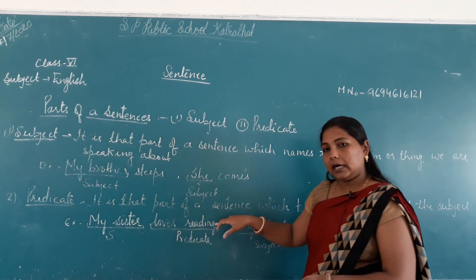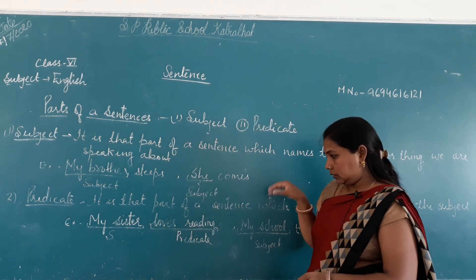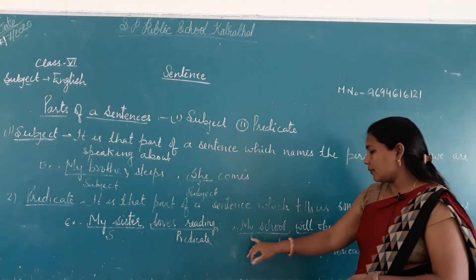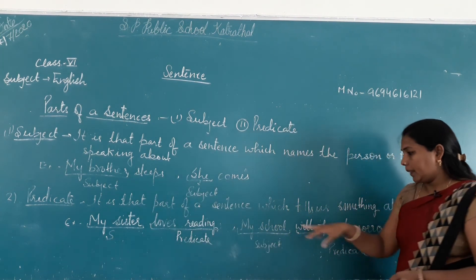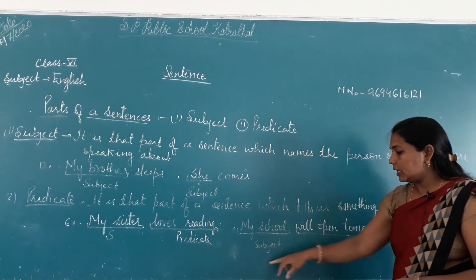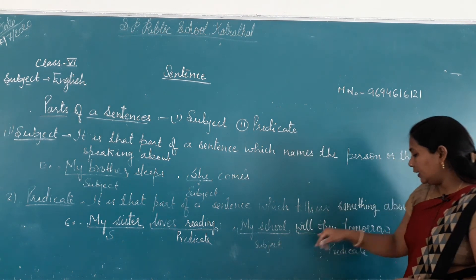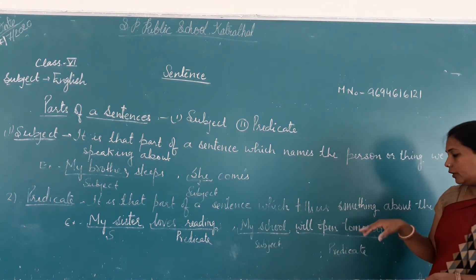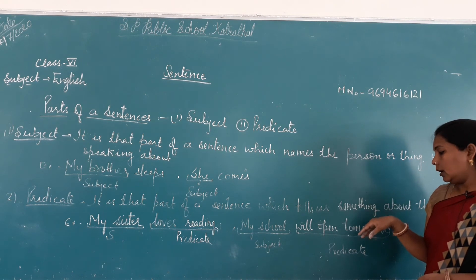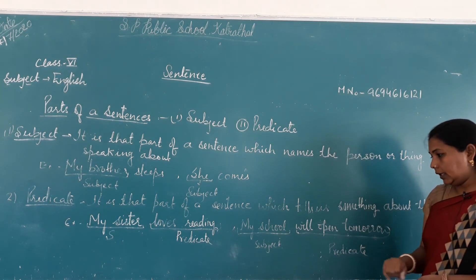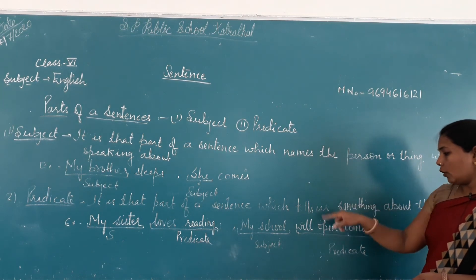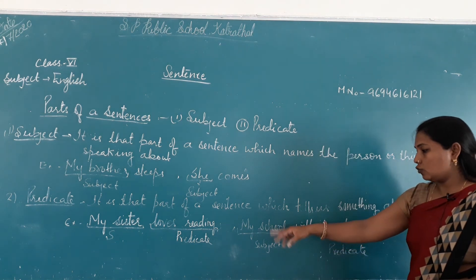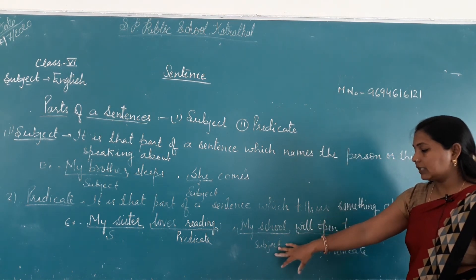Next example: 'My school will open tomorrow.' My school is the subject and 'will open tomorrow' is the predicate. मेरी school कल खुलेगी — तो 'will open tomorrow' कौन कर रहा है? My school कर रही है। तो 'my school' हमारा subject है और 'will open tomorrow' हमारा predicate है।